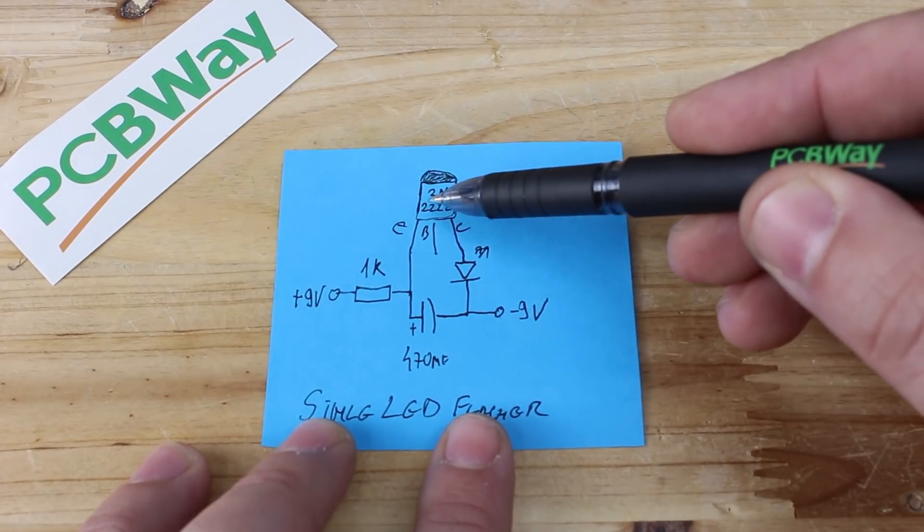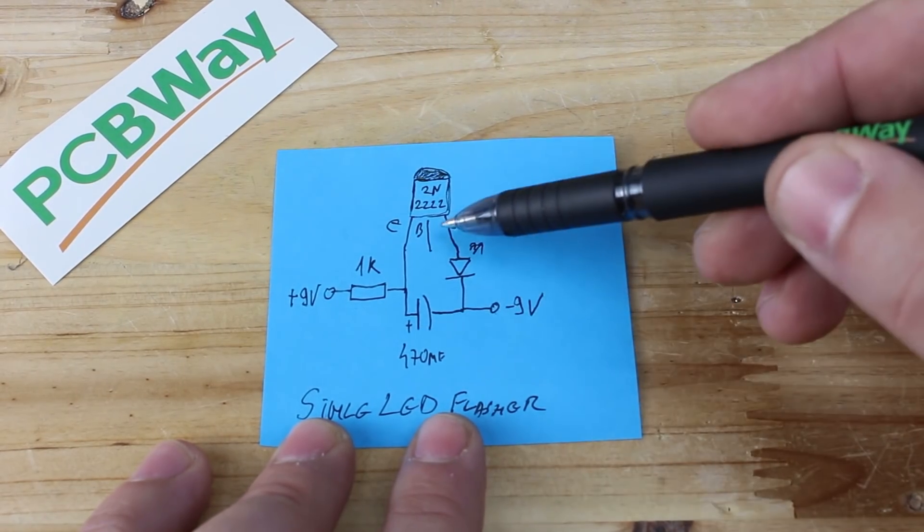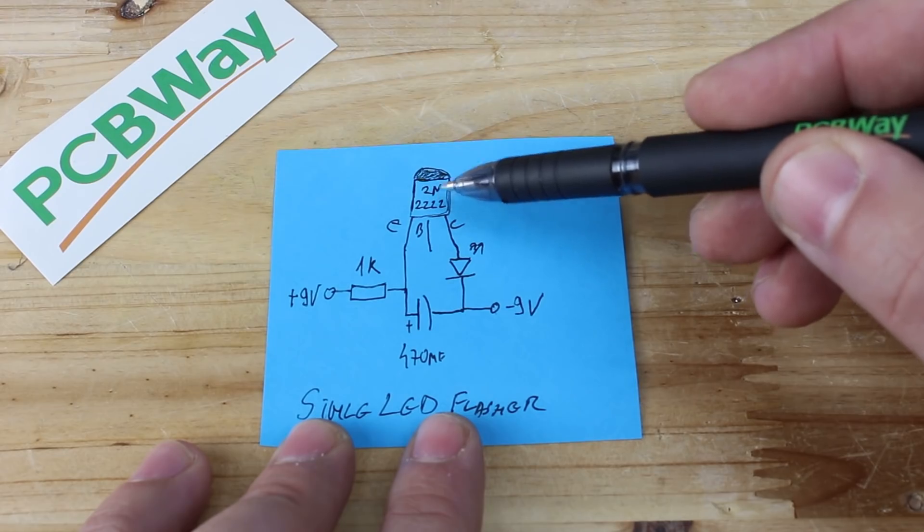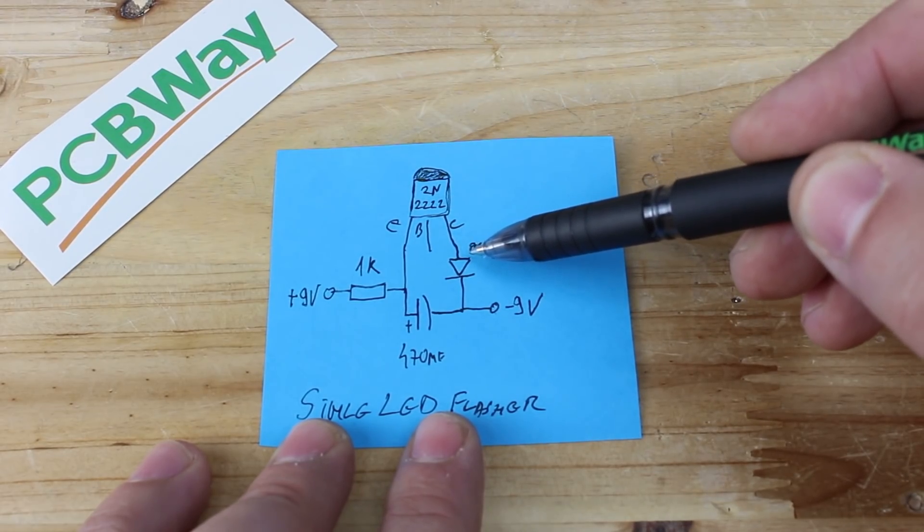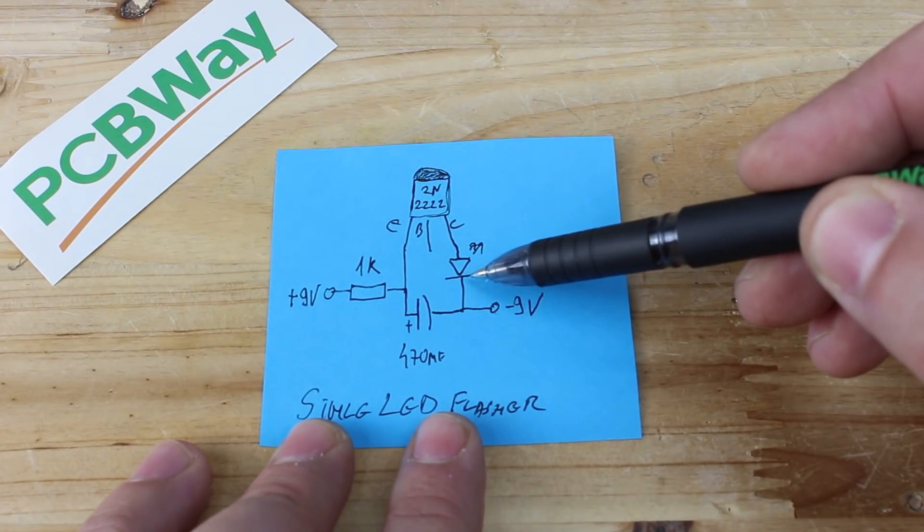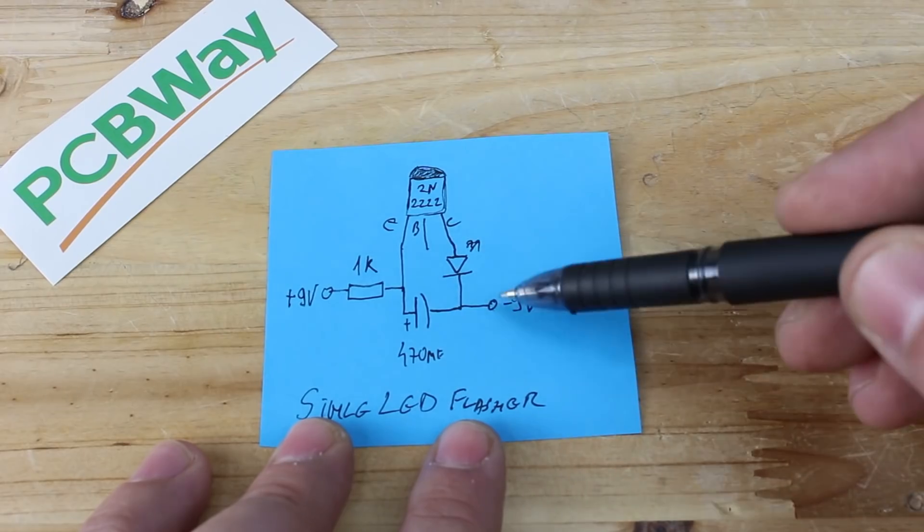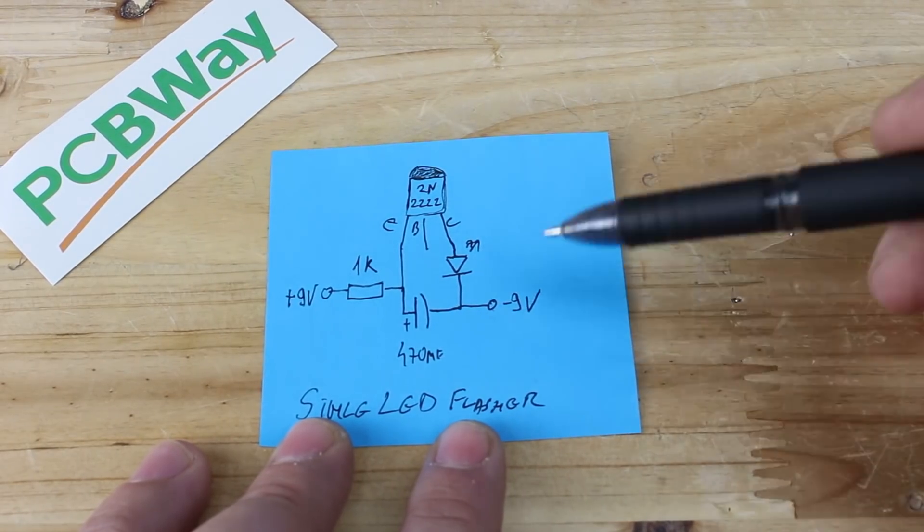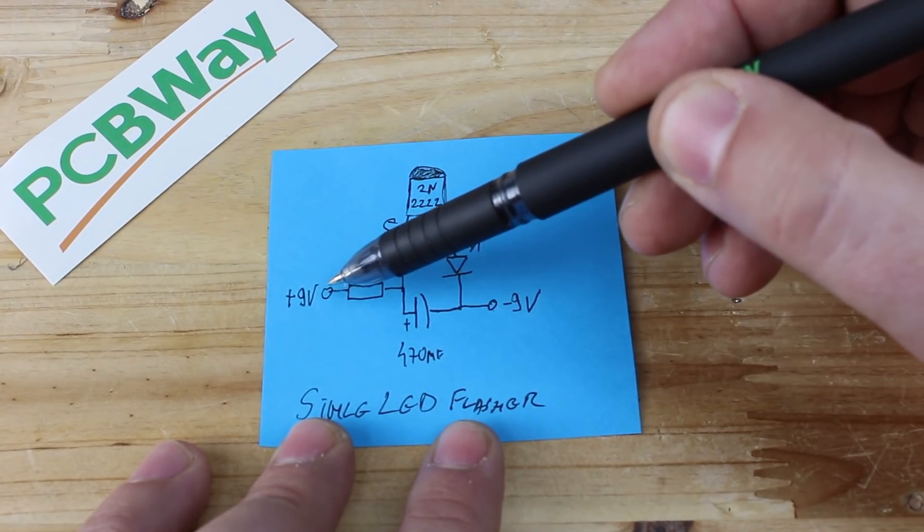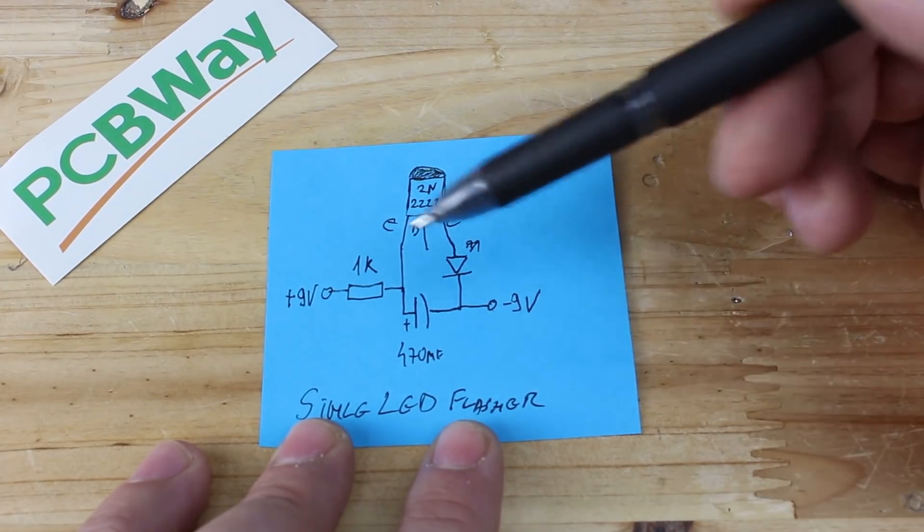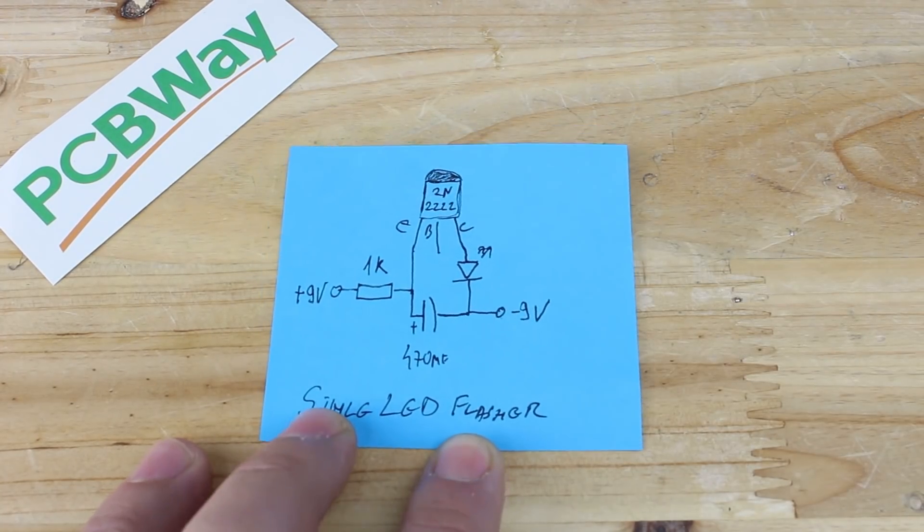Emitter from transistor is soldered to one kilo ohm resistor and positive side of capacitor. The base of transistor is not connected. Collector of transistor is soldered to positive side of LED. Negative side of LED is soldered to negative side of capacitor. And here we gonna solder the negative wire from 9V battery. On one kilo ohm resistor, we gonna solder the positive wire from 9V battery. Simple LED flasher.